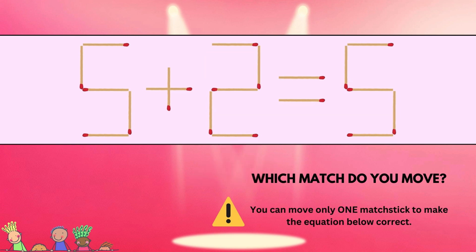All you need to do is take the top vertical matchstick from the first five and shift it over to the right, making it a 3. Now the equation reads 3 plus 2 equals 5, which is very much correct. This one was an easy one, right?